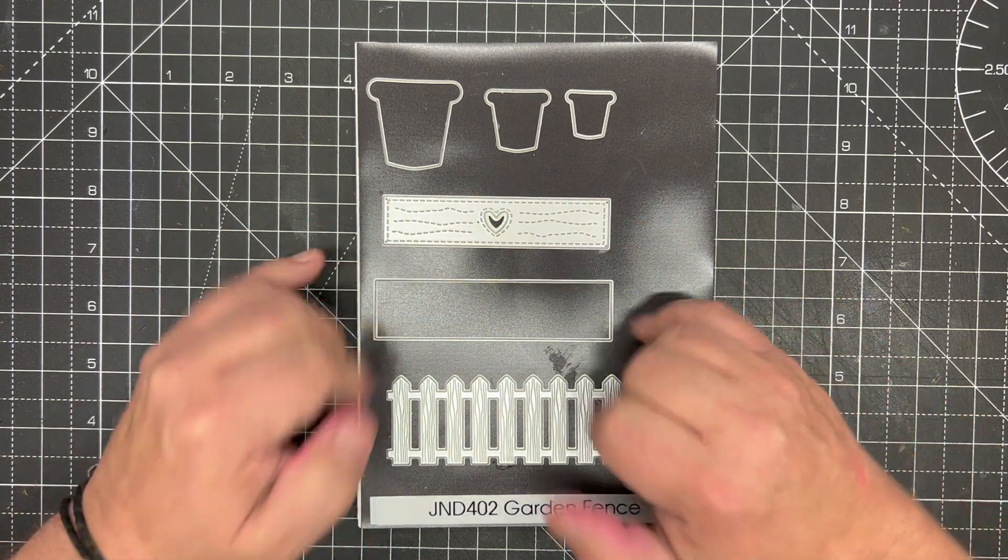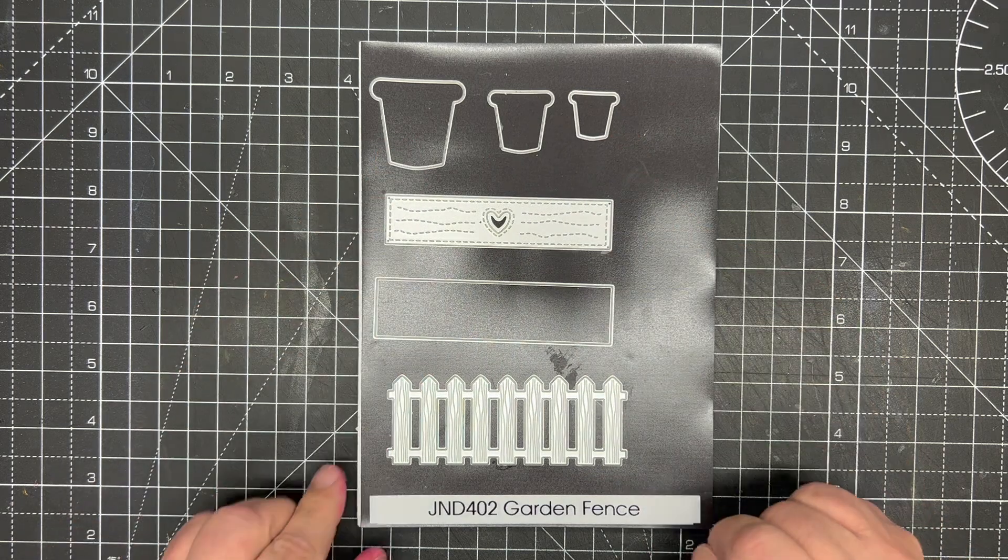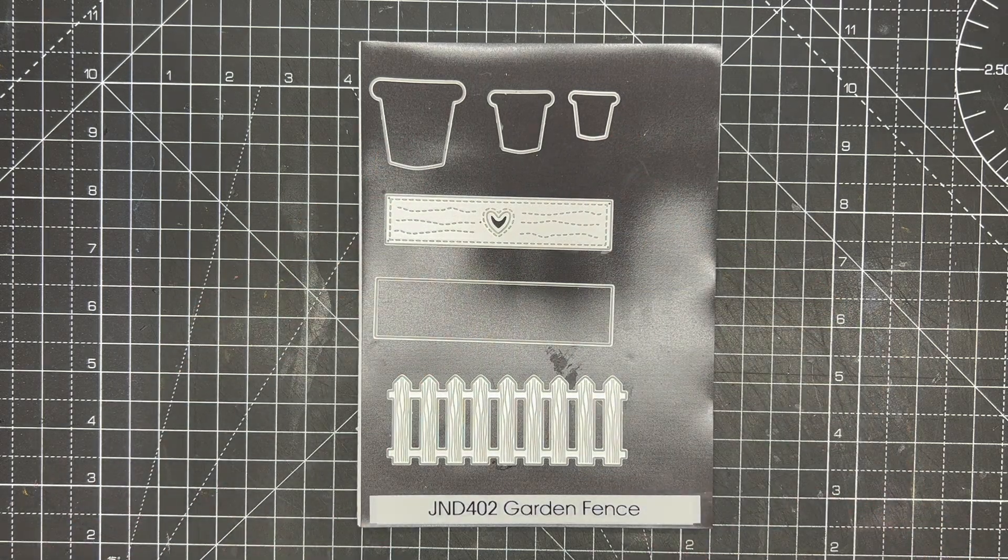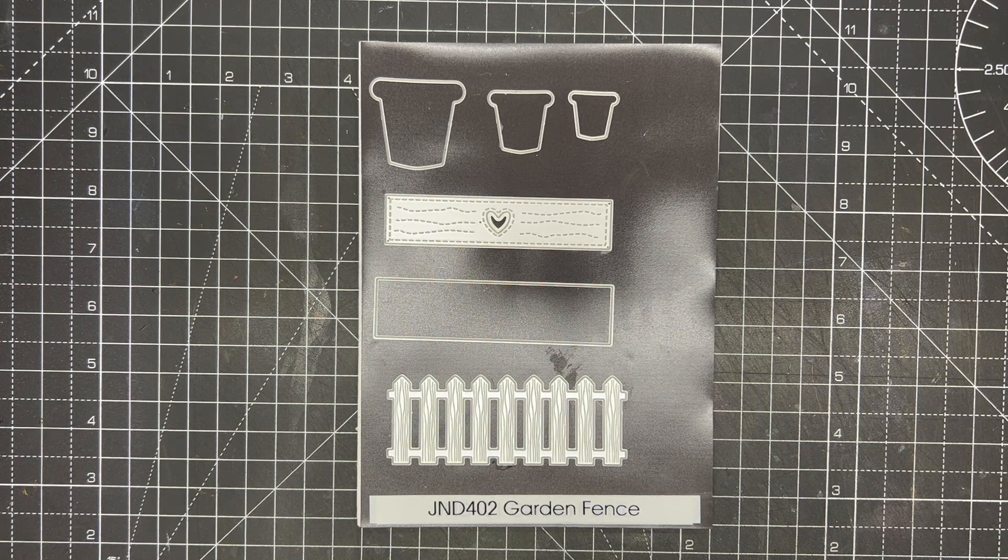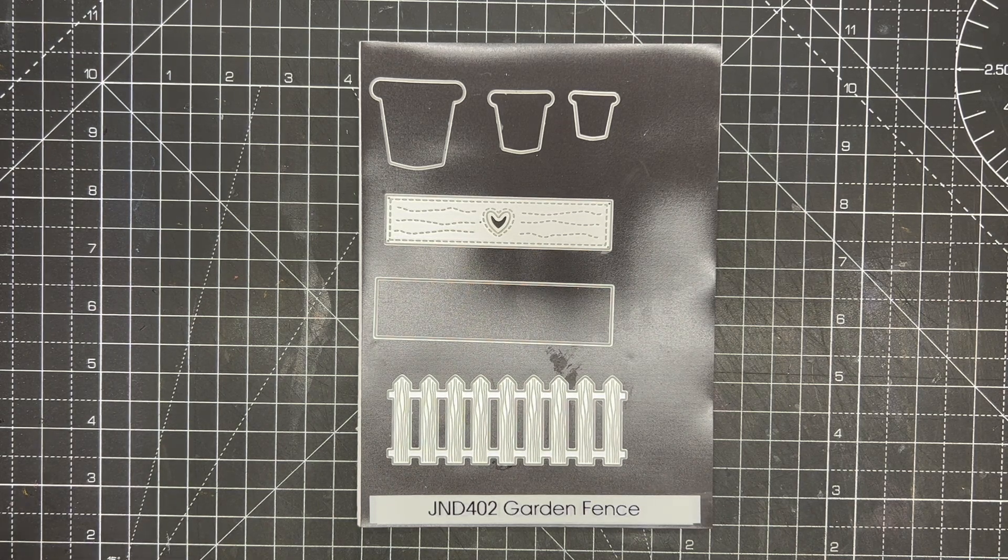It has three sizes of pots so you can really work it with the garden flower range or your other range of John Next Door dies or dies from other companies to make beautiful cards.